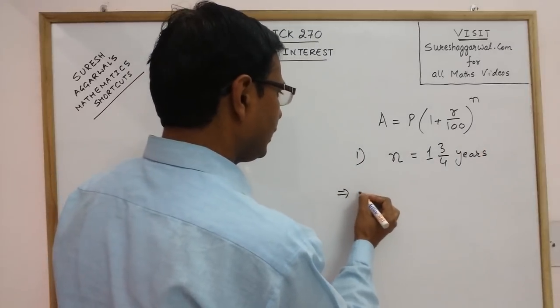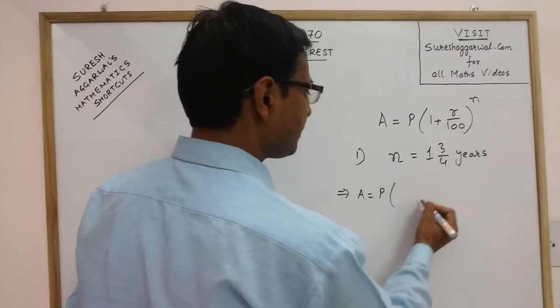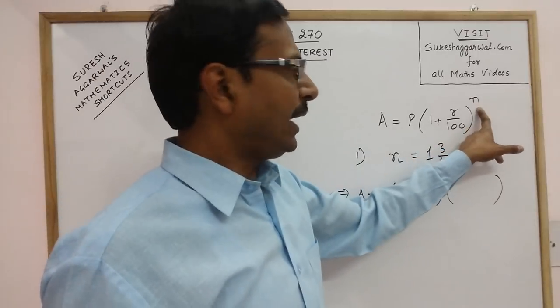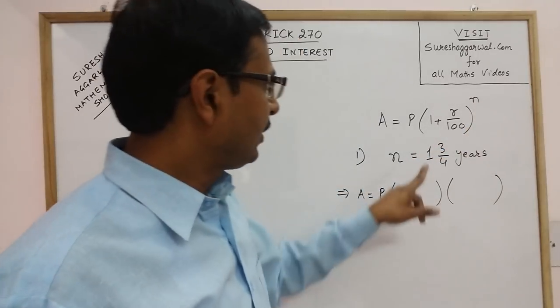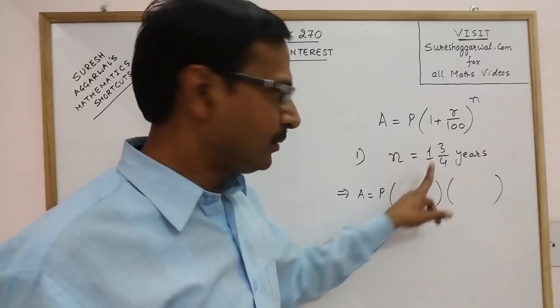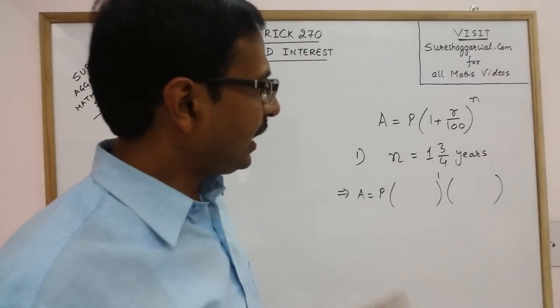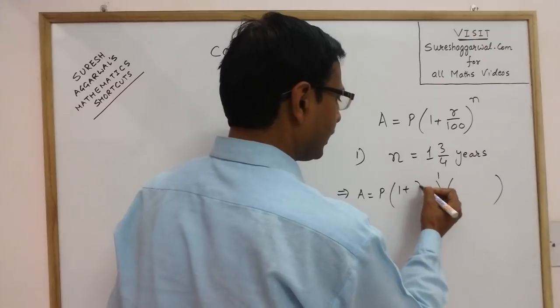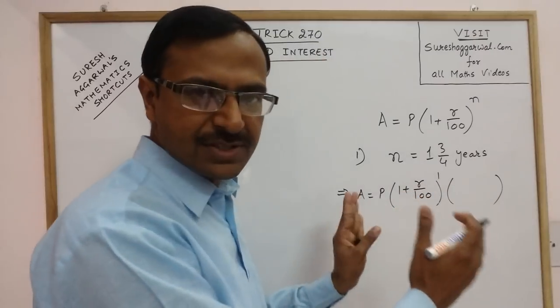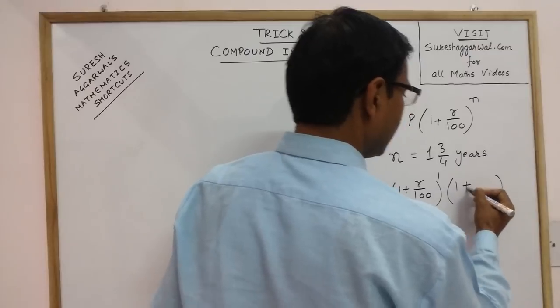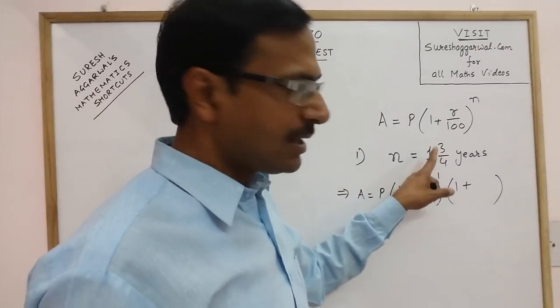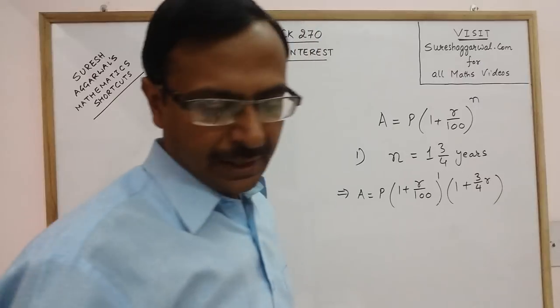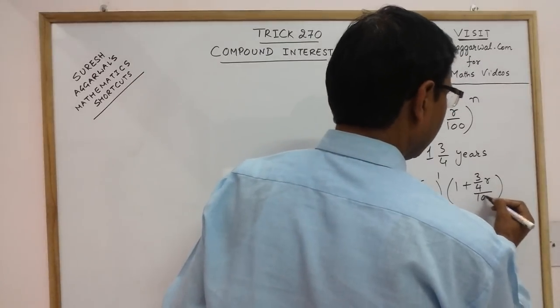So we can find out the amount by splitting this n into 2 parts. We will have the whole number part that is 1 here and this 3/4, now 1 plus R upon 100 power 1 that is the first term and 1 plus in place of R, this 3 upon 4 becomes the coefficient of R. And in turn we divide this by 100.